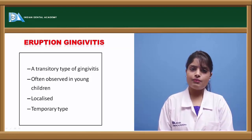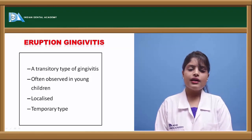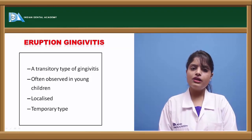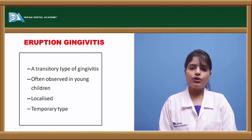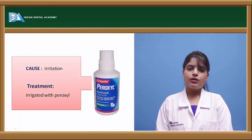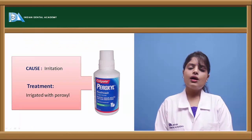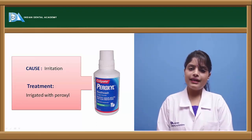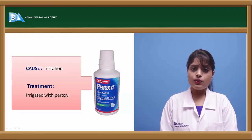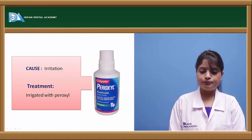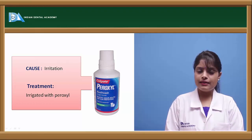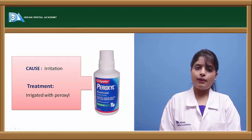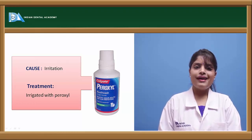Eruption gingivitis is a transient phase that subsides on its own. It is due to localized infection and inflammation from accumulated food debris and poor oral hygiene. Treatment involves irrigation with peroxide or a topical anesthetic agent and maintenance of oral hygiene measures. Bluish discoloration of the gingiva around the erupting tooth may be observed, and it can also be erythematous in nature.